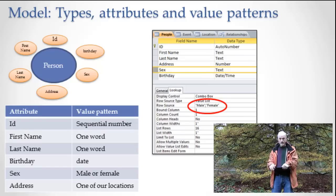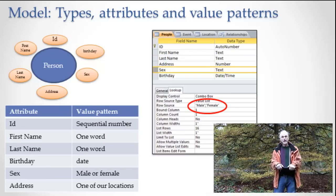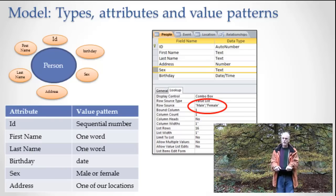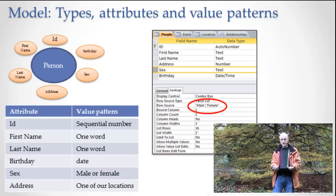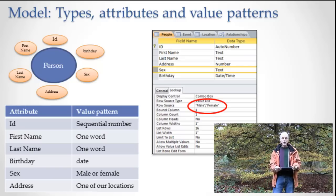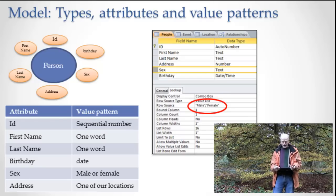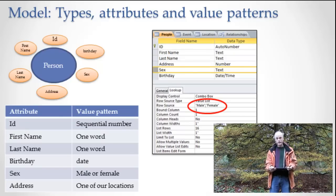Everything in our visual model is also in our database model. The database model is really specific and exact and gives you much finer control over an attribute pattern than we've talked about in this class. It's a mechanical way of encoding all the things that up until now we've just looked at visually. In database terminology, we don't say types, attributes, and value patterns — we say tables for types, columns for attributes, and data types for value patterns. But in all other ways, it's really the same.